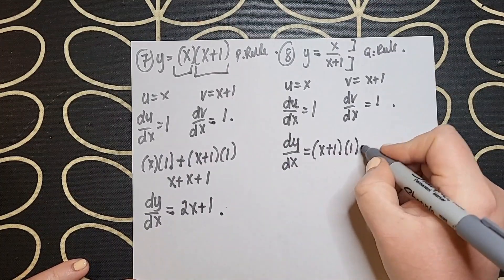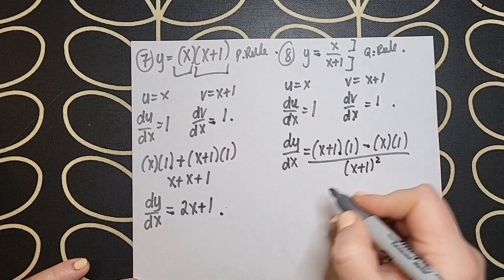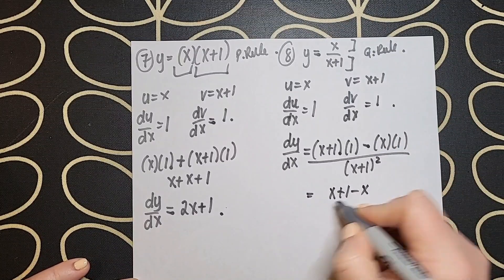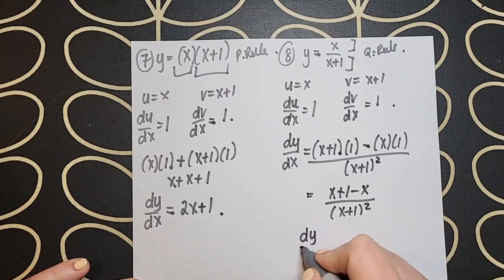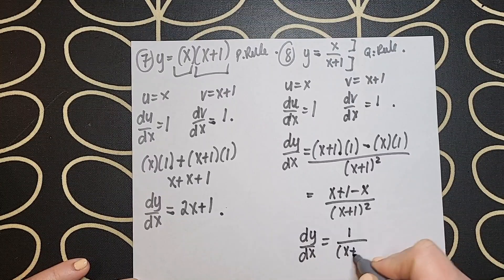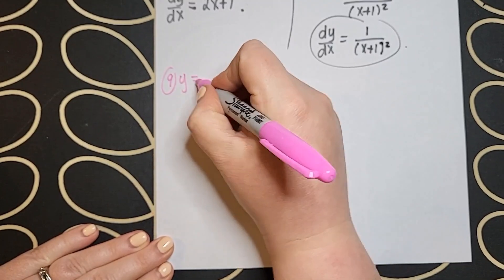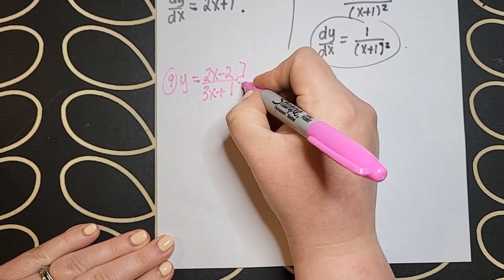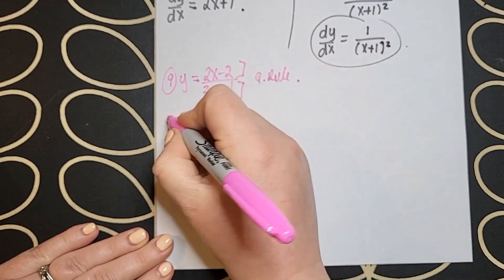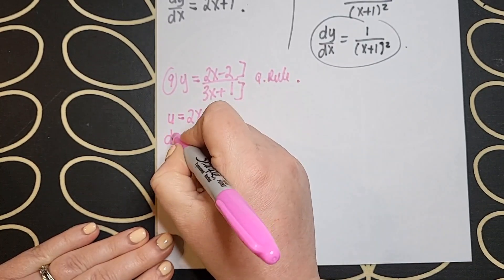Likewise in question eight and question nine we will see that we have a dividing situation which we use the quotient rule for again on page 25 of log tables. Identify your u and your v, differentiate u, differentiate v and pull all that together using the rule in that log tables. Tidy it up the best you can and you get your dy dx.